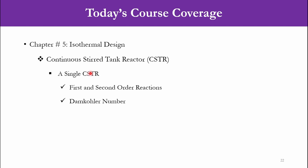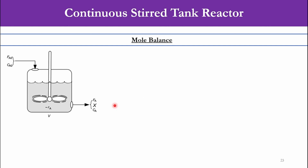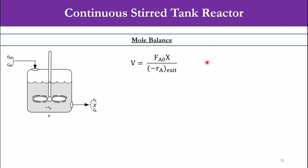We will discuss the single CSTR for first and second order reactions, and then the Damköhler number. To apply the algorithm, for this CSTR the feed is represented as FA0, concentration as CA0, rate of reaction as minus RA, volume of the reactor as V, outlet flow rate as FA with conversion X, and CA is the concentration of the limiting reactant. We will first go to the mole balance or design equation for the CSTR: V equals FA0·X over (−RA) at exit.